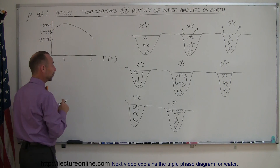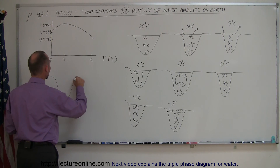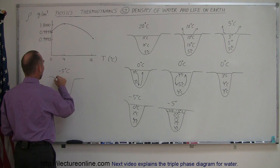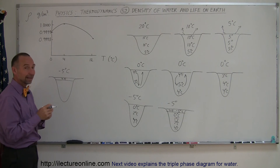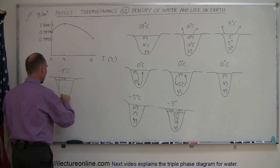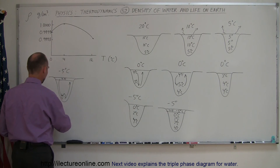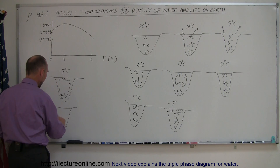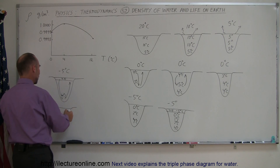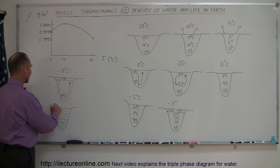What would happen if water were a normal substance — like 99.9% of all other substances in the universe — and it got to be really cold outside, say minus 5 degrees centigrade, and ice was forming at the top? Normally, frozen substances are more dense than non-frozen substances, so ice would sink to the bottom and water would rise to the top. The warmer water would rise to the top, ice would sink to the bottom, and slowly but surely the whole lake would fill with ice, until eventually the entire body of water would become completely frozen.